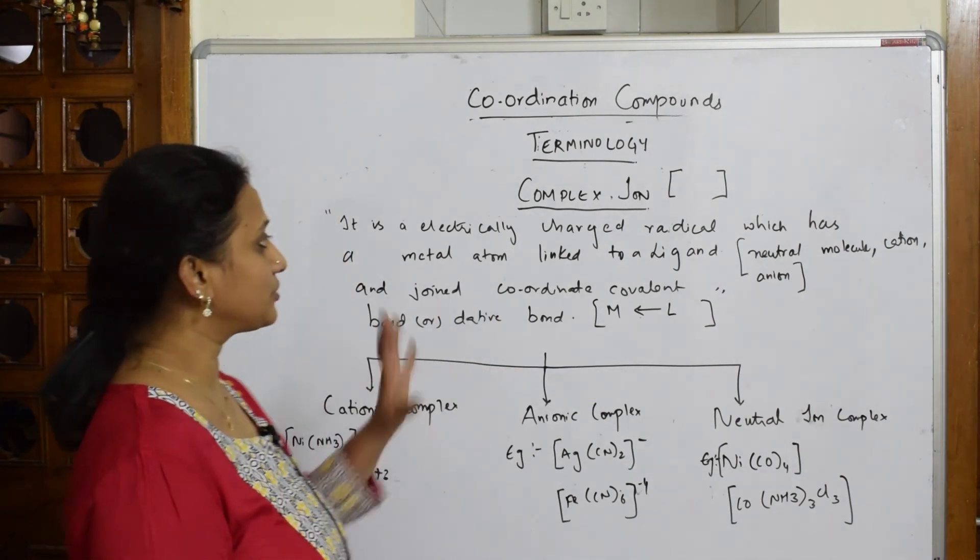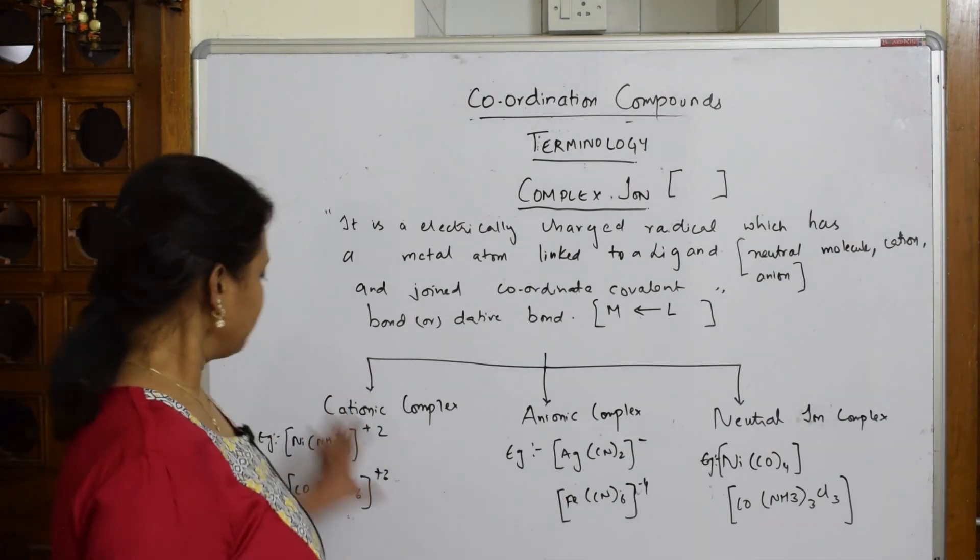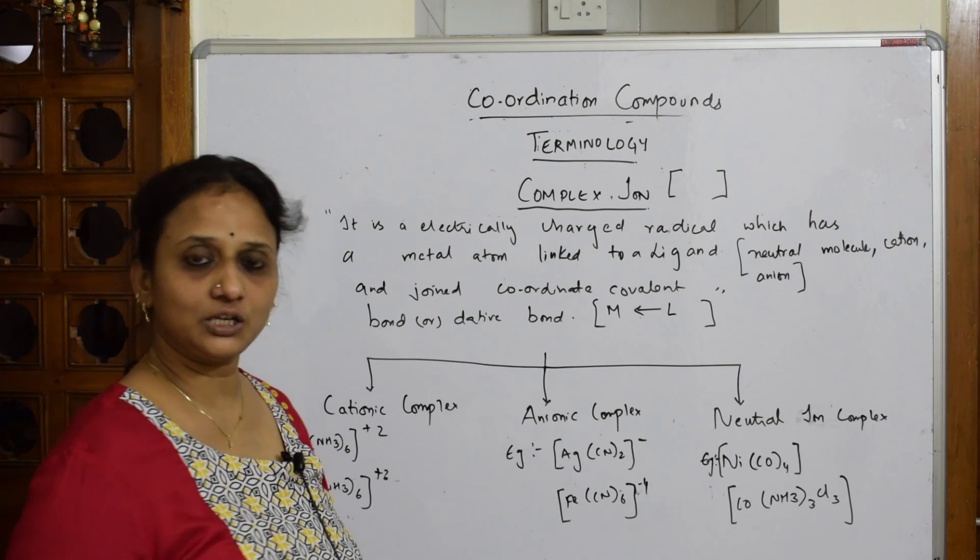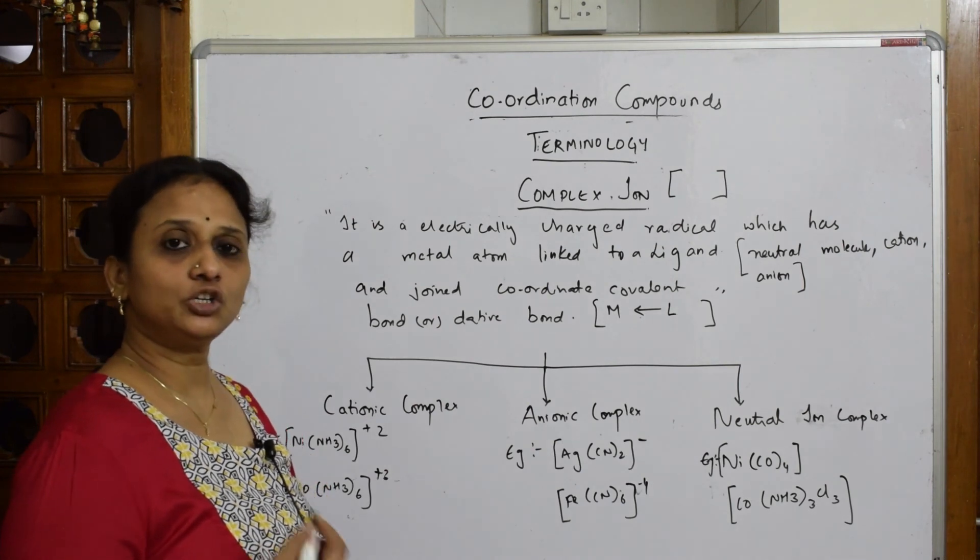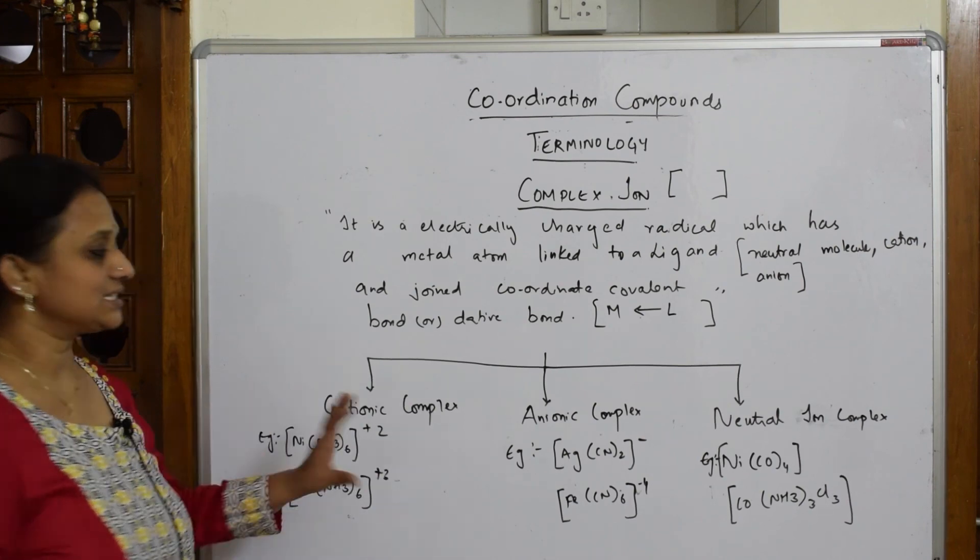This is how you define complex ions, and I've given you two examples for each type. Please practice these properly. By the end of the chapter you'll know how to write a complex, but for now practice these examples.